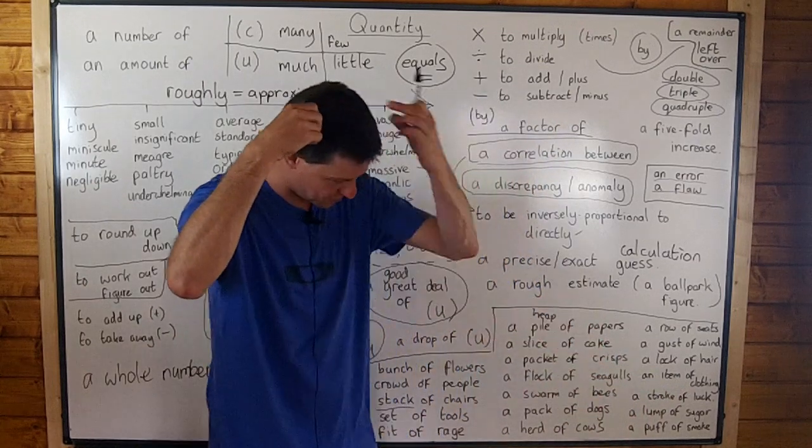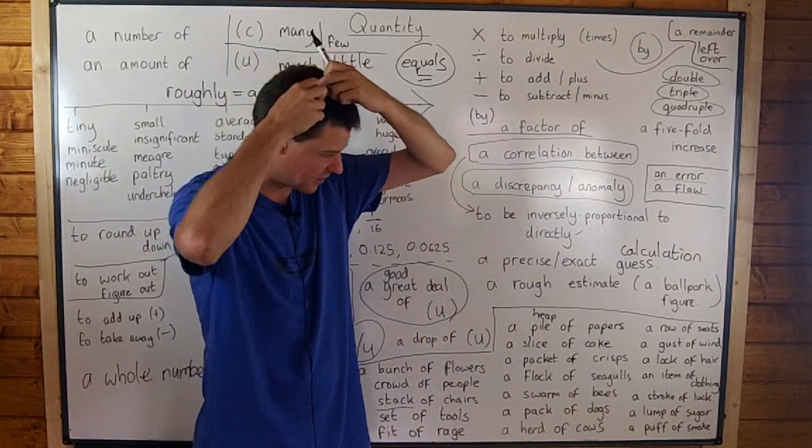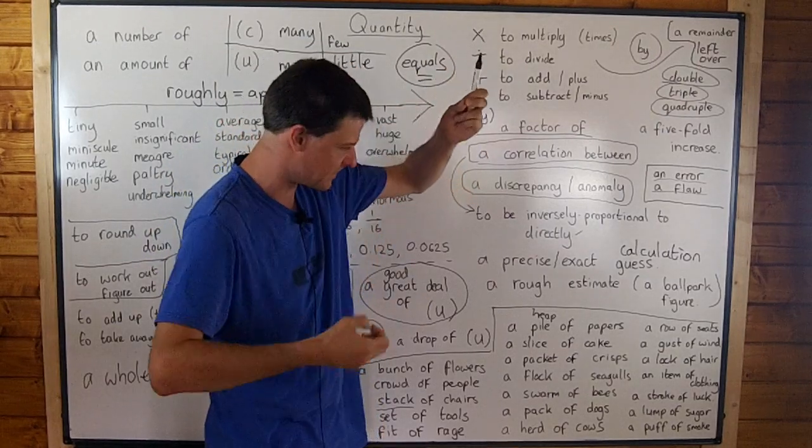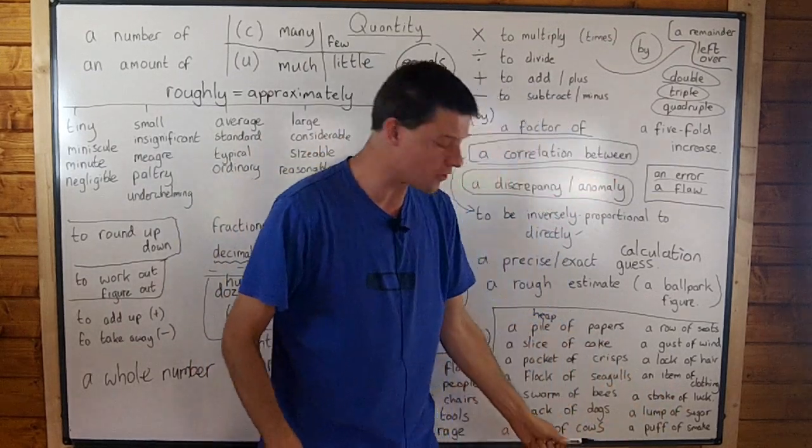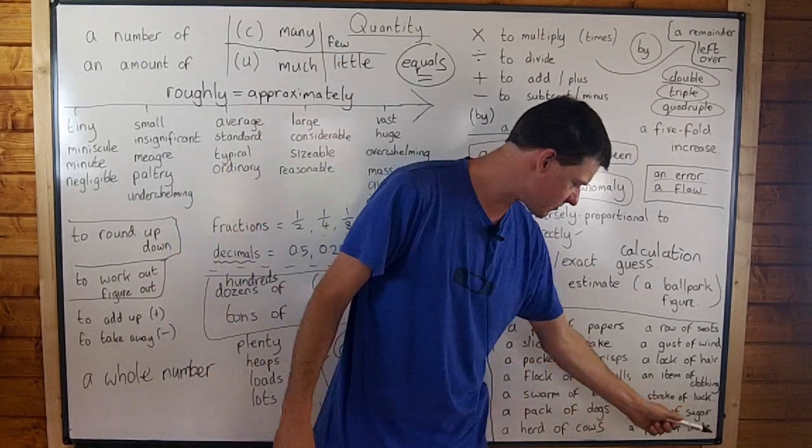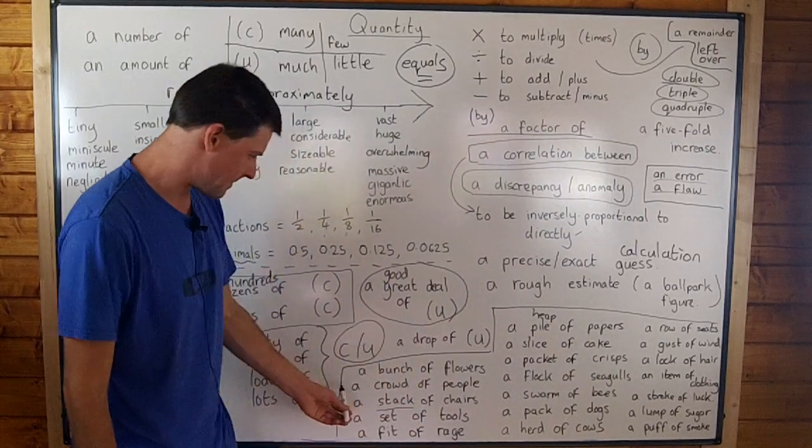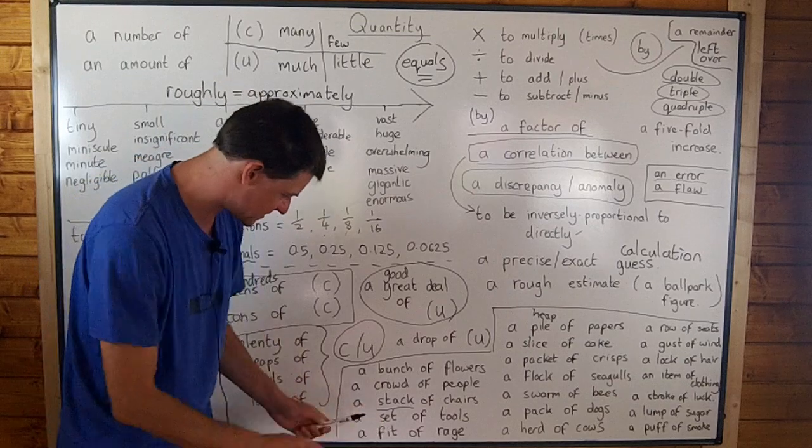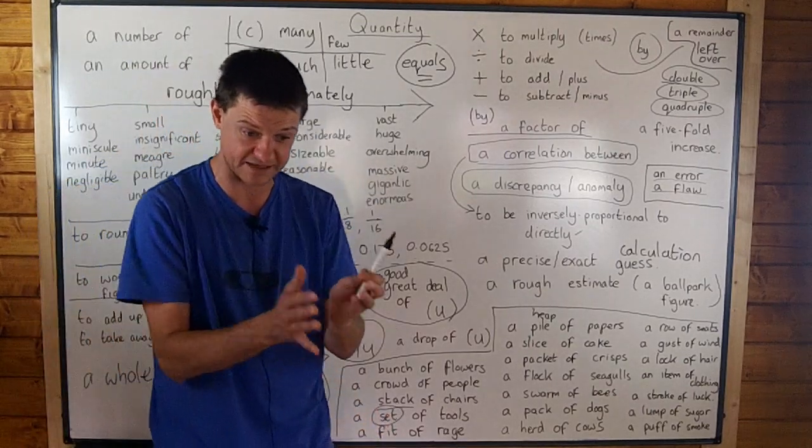I'd say a strand of hair for one, but a lock of hair, I think of quite a few hairs in the lock of hair, but one piece of the hair. An item of clothing or an article of clothing. It's another way you can say it. A stroke of luck, a lump of sugar, a puff of smoke, a bunch of flowers, a crowd of people, a stack of chairs.